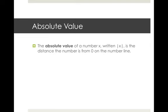Just as a reminder, the absolute value of a number X, written with two little lines on either side of the X, is the distance the number is from zero on the number line.